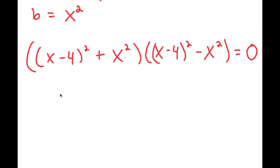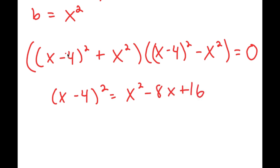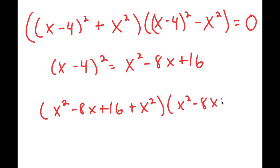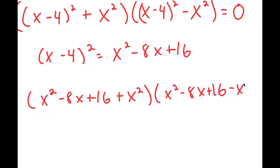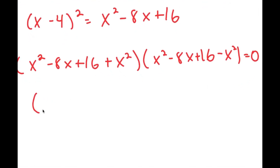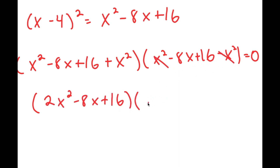Now I'm going to expand (x minus 4) squared, which equals x squared minus 8x plus 16. So I get (x squared minus 8x plus 16 plus x squared) times (x squared minus 8x plus 16 minus x squared) equals 0. The x squared terms in the second factor cancel, and x squared plus x squared in the first factor gives 2x squared, so I have (2x squared minus 8x plus 16) times (negative 8x plus 16) equals 0.